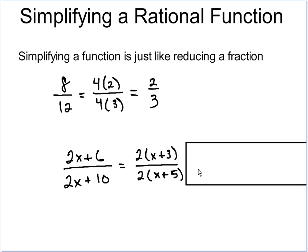Now, just like in the fraction above, since I have the same thing on the top and the bottom, I can cancel those out. And I'm left with x plus 3 over x plus 5.